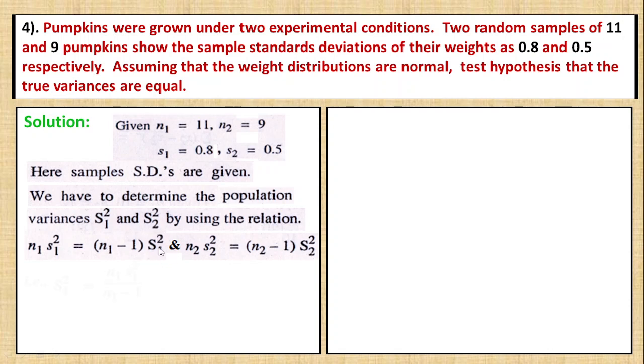n₁s₁² by (n₁ - 1) gives S₁². The F test formula is: capital F equals capital S₁² by capital S₂². So for the small s₁² variance, we apply the n₁ value: 11 minus 1 is 10, simplifying to 0.704.